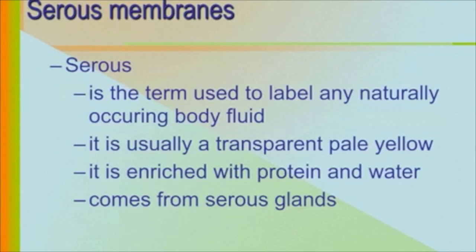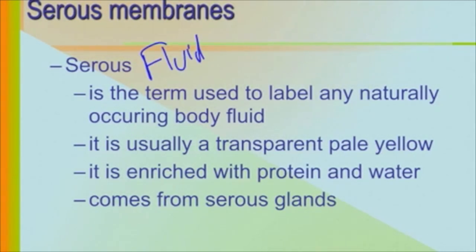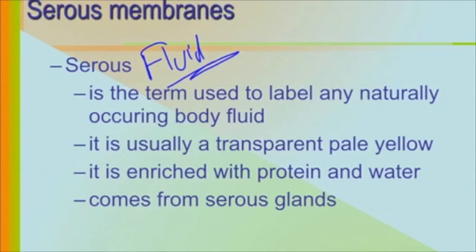These membranes are called serous because they produce serous fluid. This term labels any naturally occurring body fluid found between these membranes. It is typically a transparent, pale yellow fluid — water enriched with protein — produced by serous glands found within the serous membranes.